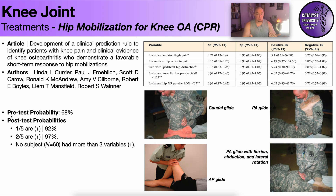So a patient comes in with knee osteoarthritis and pain, and other than that you don't know anything else about them — they have knee arthritis. The probability, or pretest probability, that a hip mobilization will help their knee arthritis and pain is 68%.